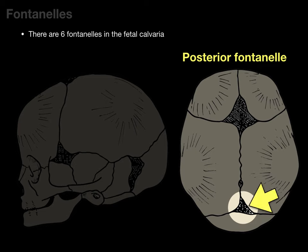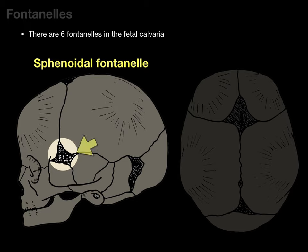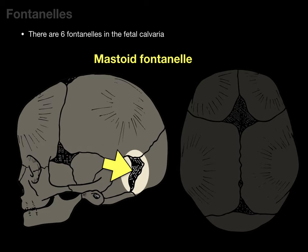The posterior fontanelle is bordered by the sagittal suture as well as the lambdoid sutures, and it fuses around three months — one of the first to fuse. The sphenoidal fontanelle is on the lateral anterior side of the skull, just above the sphenoid bone, and it fuses about six months after birth. Finally, the mastoid fontanelle is on the lateral backside of the skull and fuses anywhere between six and 18 months after delivery.